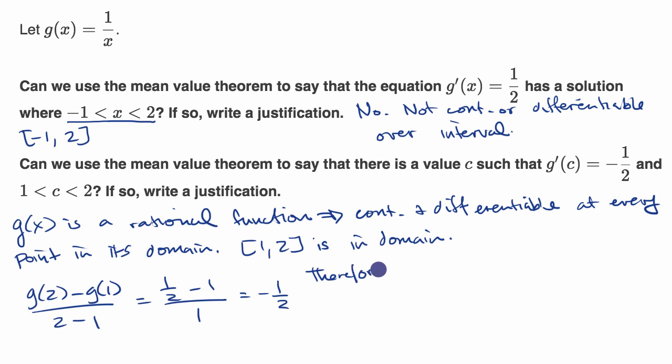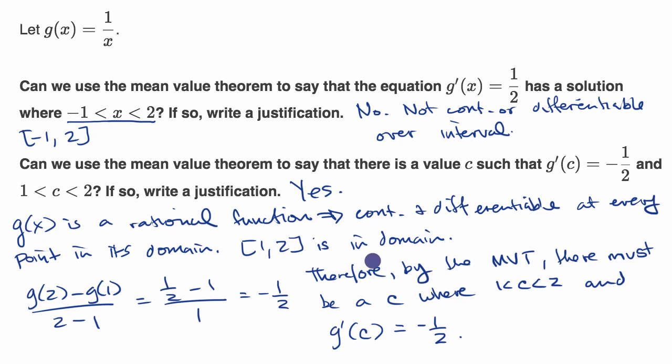Therefore, by the mean value theorem, there must be a c where one is less than c is less than two, and g prime of c equals the average rate of change between the endpoints, negative one half. And we're done. So we could put a big yes right over there, and this is our justification.